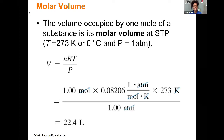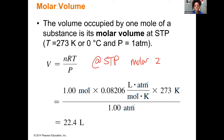When we look at our ideal gas law — PV equals nRT — we see that the volume occupied by one mole of a substance at STP, if we actually calculated that, would equal 22.4 liters. So at STP the molar volume is 22.4 liters equal to one mole. This happens regardless of the material that we're talking about.